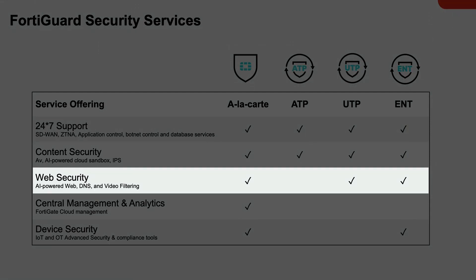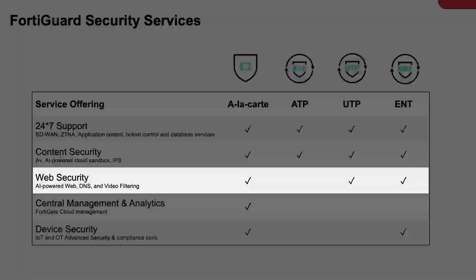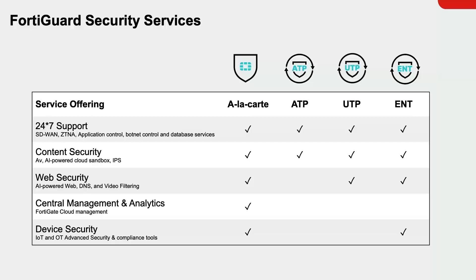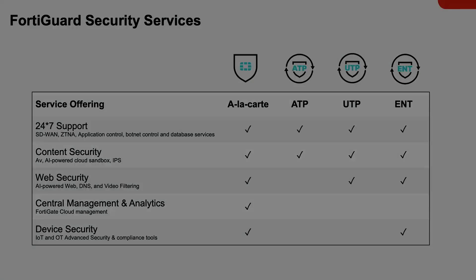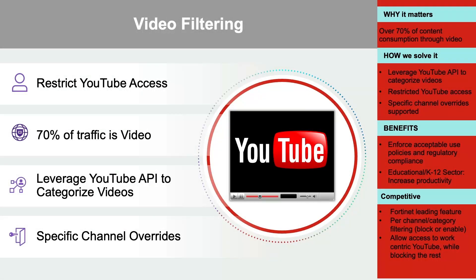The web security subscription is comprised of web and content, secure DNS, and video filtering. This video will specifically be covering video filtering. FortiGuard's video filtering service provides the same level of granular filtering for YouTube as it does with other web traffic, including granular controls based on channels beyond categories. It does so by leveraging YouTube APIs. This ability to apply granular video filtering controls helps organizations achieve stronger regulatory compliance.